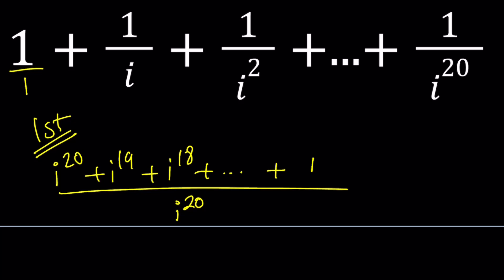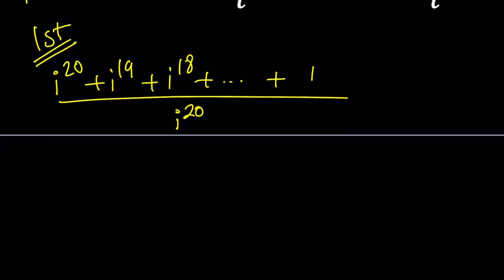Now i to the power 20 is actually kind of easy to deal with because as you hopefully know i to the fourth power is 1 and therefore if you have anything like i to the power 4k it's equal to 1 as long as k is an integer. Now what happens if k is negative? It still works because if you raise 1 to a negative power negative integer power then you're good to go. So i to the power 20 is 1 we don't have to worry about it it's all good.